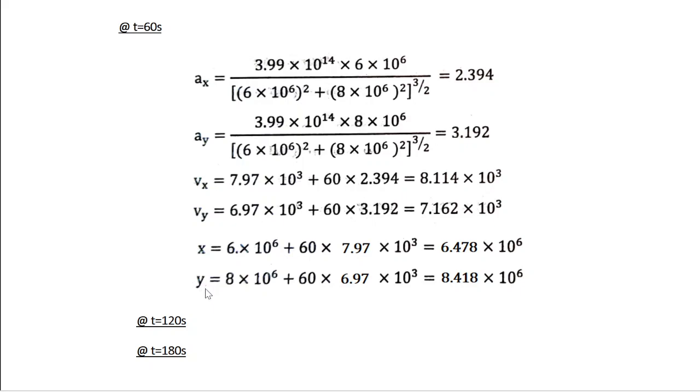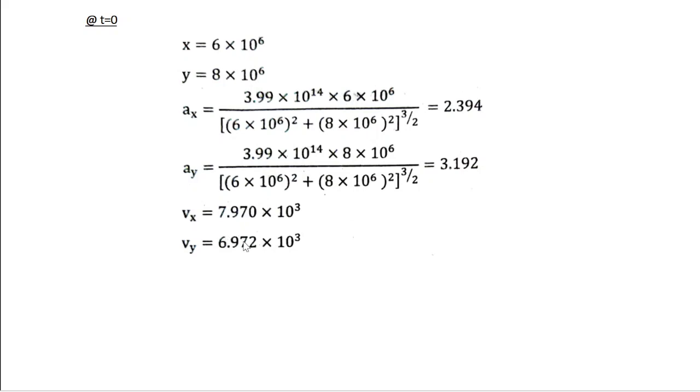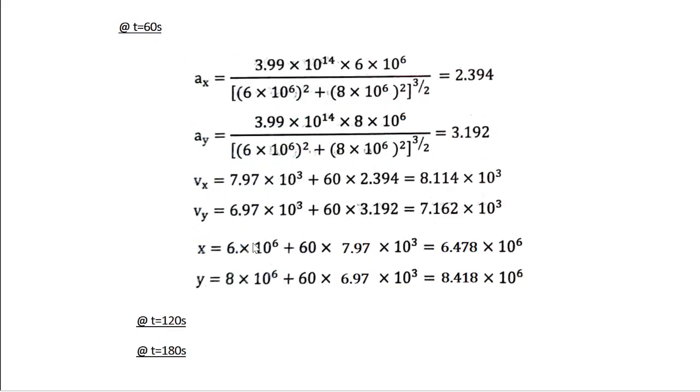Similarly, y = y₀, which is 8×10⁶, plus step size into the value of Vy in the previous sub-interval, which is 6.97×10³. So here also in the book, instead of taking Vy from the previous interval, the value in the same interval is considered. So you have to make the change. So you get 8.418×10⁶ meters. So that's for time t = 60.